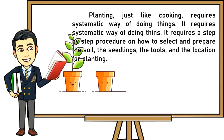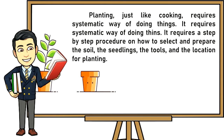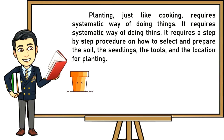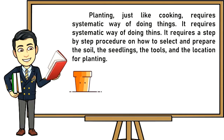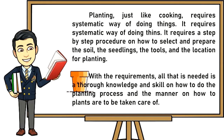Planting, just like cooking, requires a systematic way of doing things. It requires a step-by-step procedure on how to select and prepare the soil, the seedlings, the tools, and the location for planting. All that is needed is a thorough knowledge and skill on how to do the planting process and how the plants are to be taken care of.